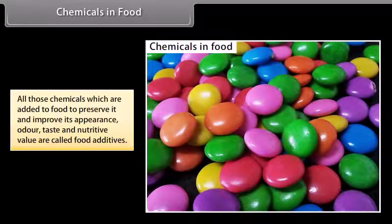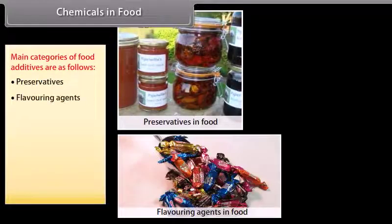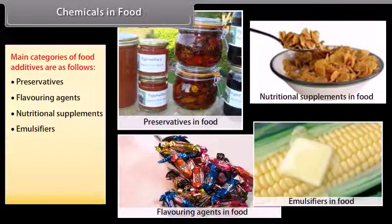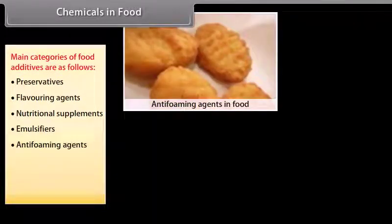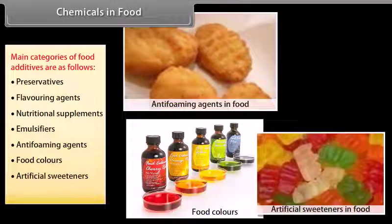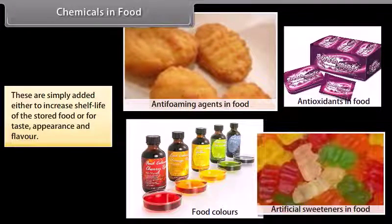Chemicals in food: all those chemicals which are added to food to preserve it and improve its appearance, odour, taste, and nutritive value are called food additives. Main categories of food additives are preservatives and flavouring agents. These are added either to increase shelf life of stored food or for taste, appearance, and flavour.